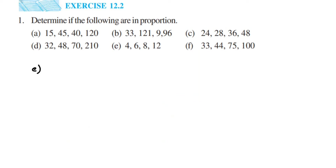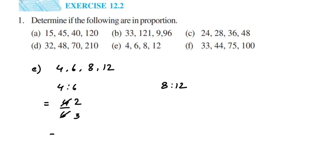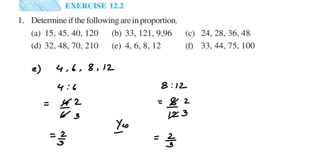Fifth question: we have 4, 6, 8, and 12. First ratio is 4 is to 6, second is 8 is to 12. For 4 by 6: cancel in the two table — two twos are 4, two threes are 6 — giving 2 by 3. For 8 by 12: cancel in the four table — four twos are 8, four threes are 12 — also giving 2 by 3. Both ratios equal 2 by 3, so yes, they are in proportion.